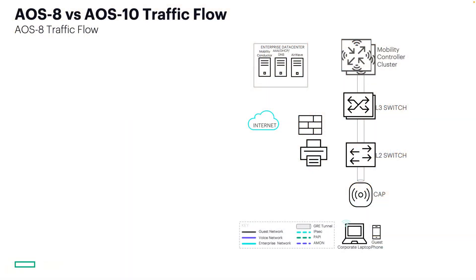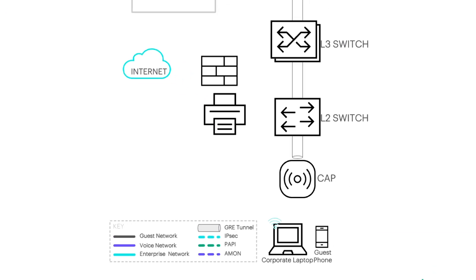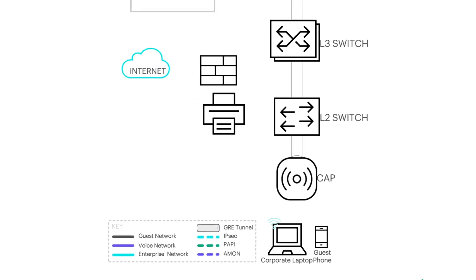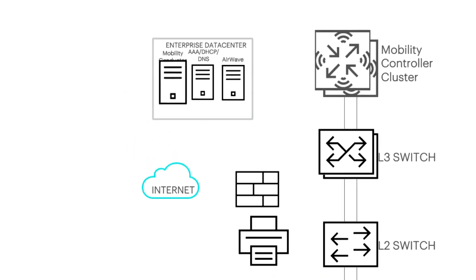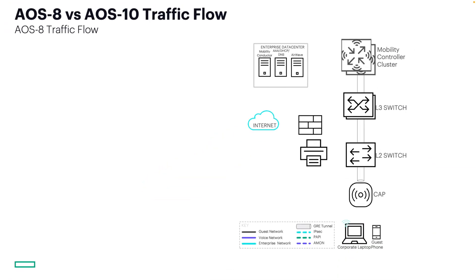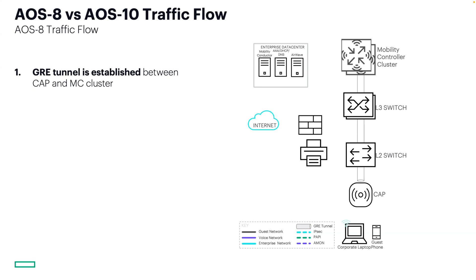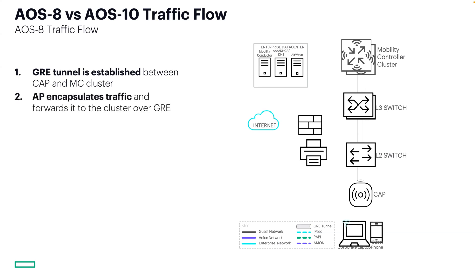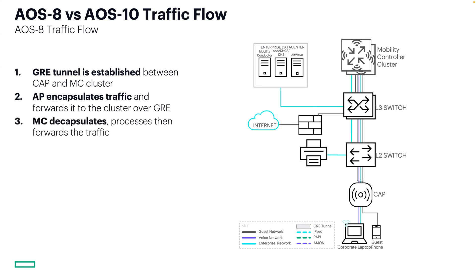Here we have an example AOS 8 controller-based deployment. It contains a campus AP, mobility controller cluster, a mobility conductor pair, and an AirWave server. Wi-Fi client traffic is encapsulated in a GRE tunnel between the AP and controller cluster. As traffic from Wi-Fi endpoints reaches the AP over its radio interface, it is encapsulated and forwarded through the wired LAN to the mobility controller. The controller then inspects the traffic, assigns a user role, tags it, and forwards it on a local interface to a trunk user VLAN.